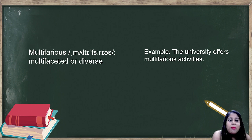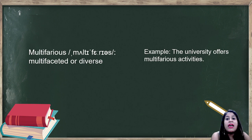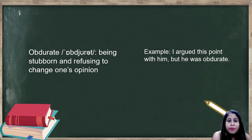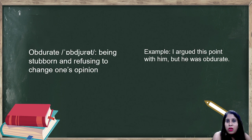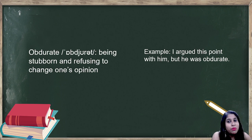Next word is 'multifarious,' meaning multifaceted or diverse. After that, 'obdurate' means being very stubborn and refusing to change one's opinion — very adamant in nature. Adamant and stubborn are both synonyms for obdurate. So you can remember: obdurate means stubborn and adamant.